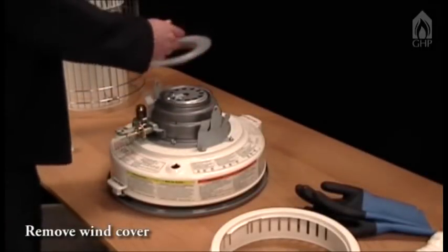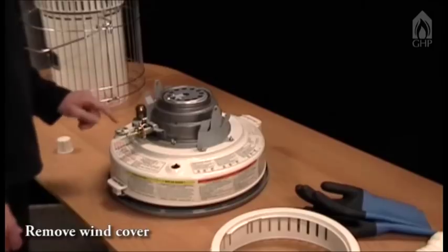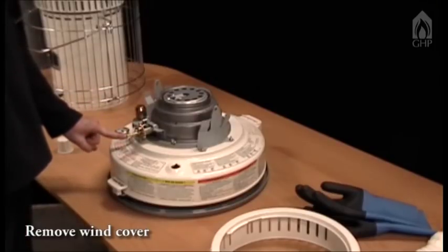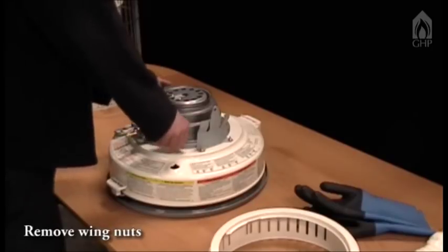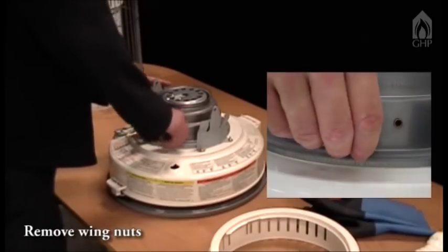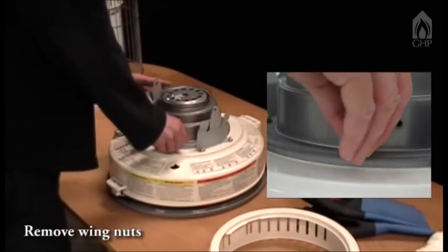Remove the wind cover. Trip the pendulum on the automatic safety shutoff system to lower the wick. Remove the four wing nuts which hold the wick assembly to the heater.